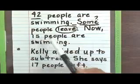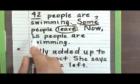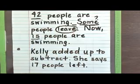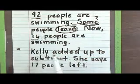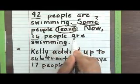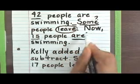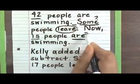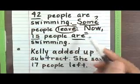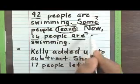The next sentence says 'now 15 people are swimming.' The most important thing in this sentence is the number 15. The important word we're also looking at is 'are,' which tells us what it equals — our total. It's telling us for a fact that 15 people are swimming. So we underline the word 'are' and write our equal sign there.